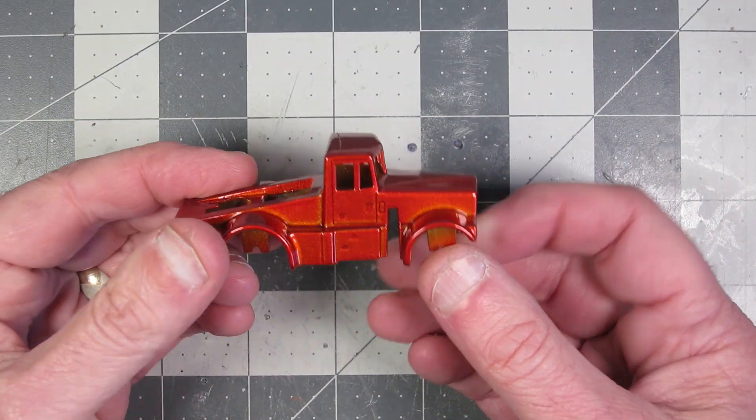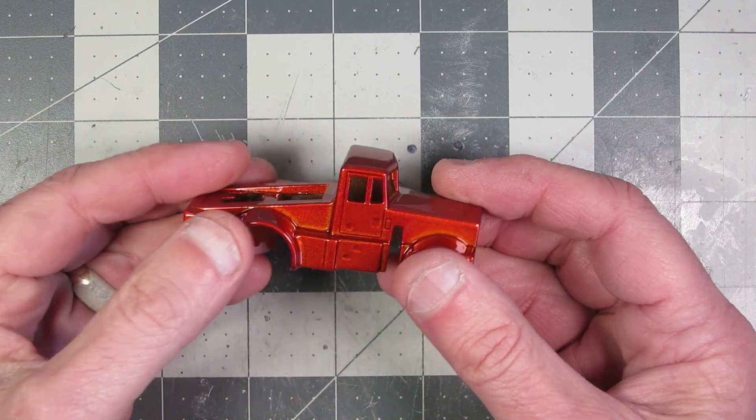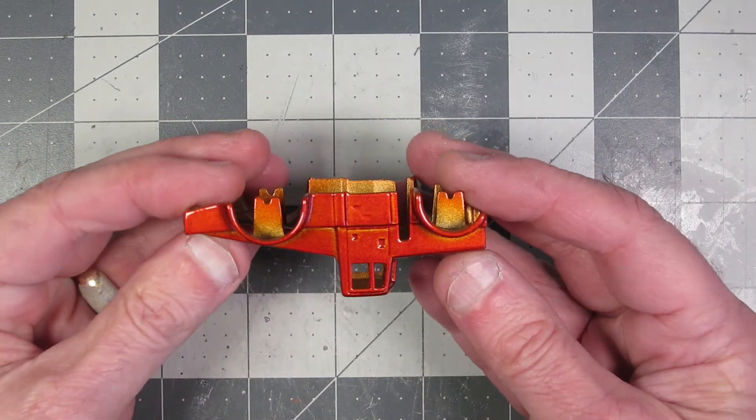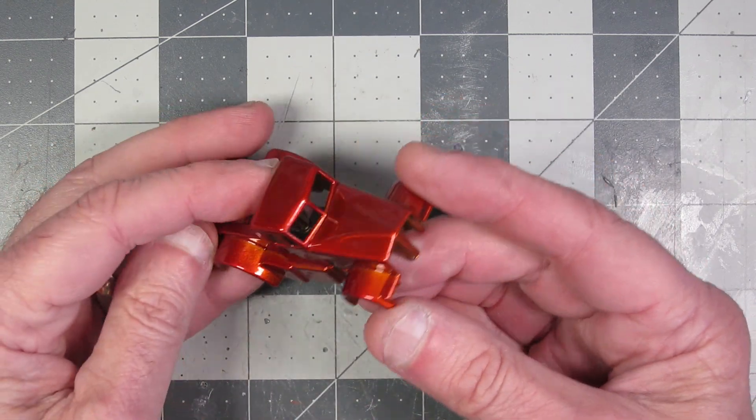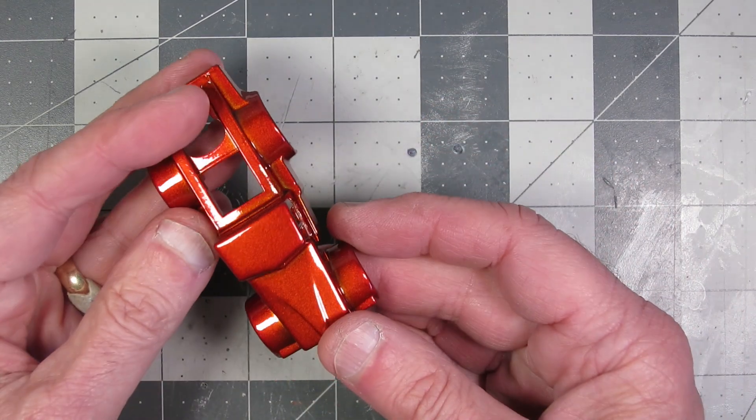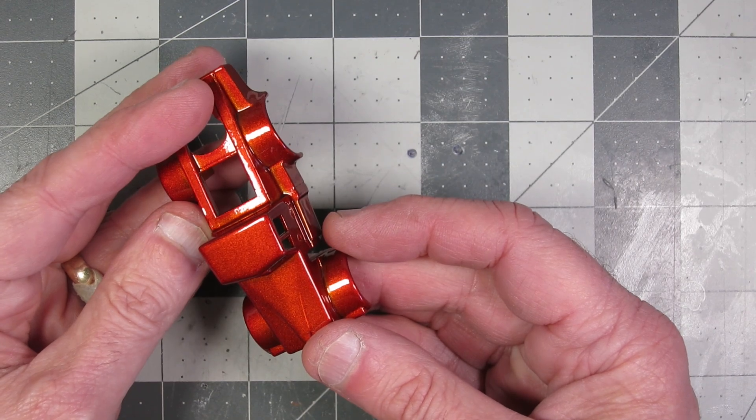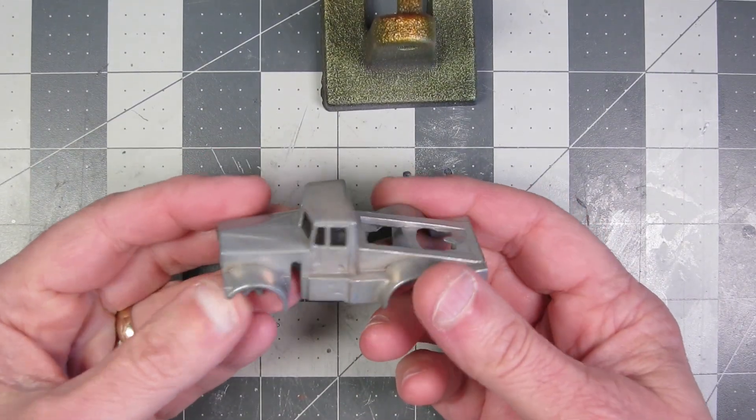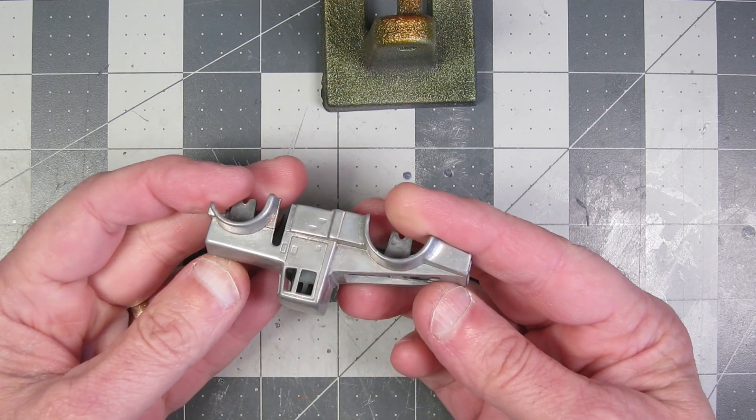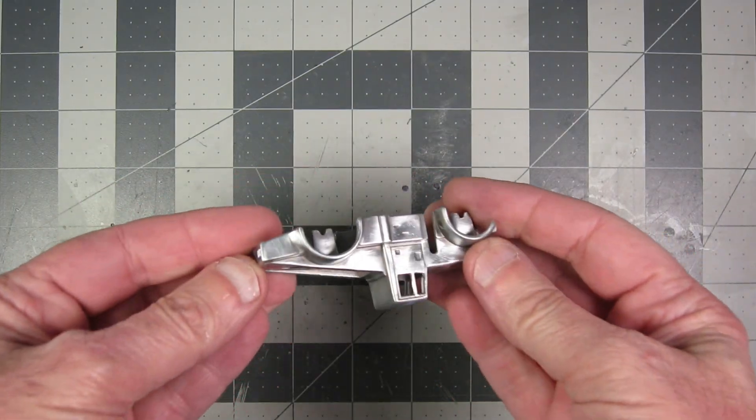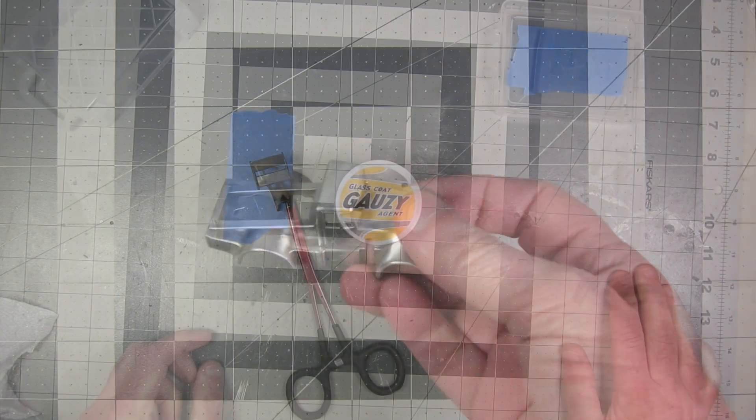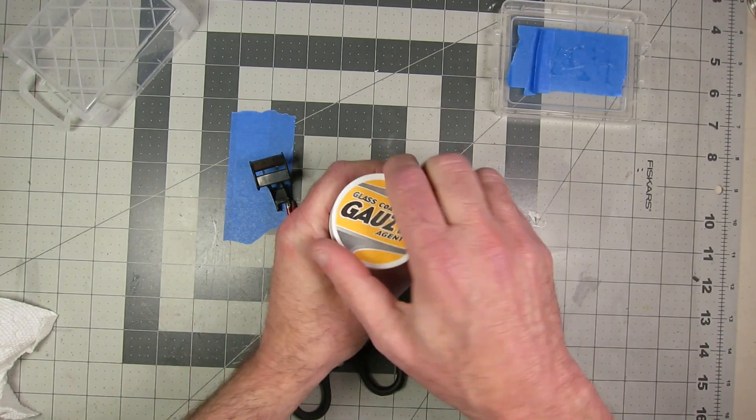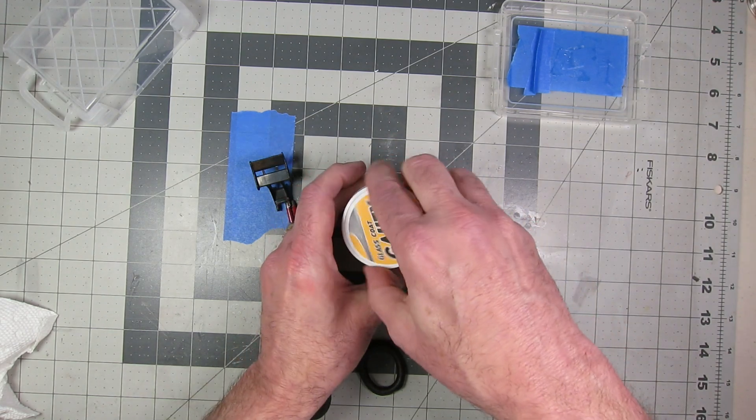And so I went over it with the spectra flame, and I wasn't happy with that paint job. It's not easy to rattle can something like this with all these nooks and crannies. And I just wasn't happy. There were some areas where it was too dark. So I thought, I'm not going the spectra flame, the metal cast paint. I'm just going to strip it down again. So I stripped it, painted it again, this time with an orange lacquer.